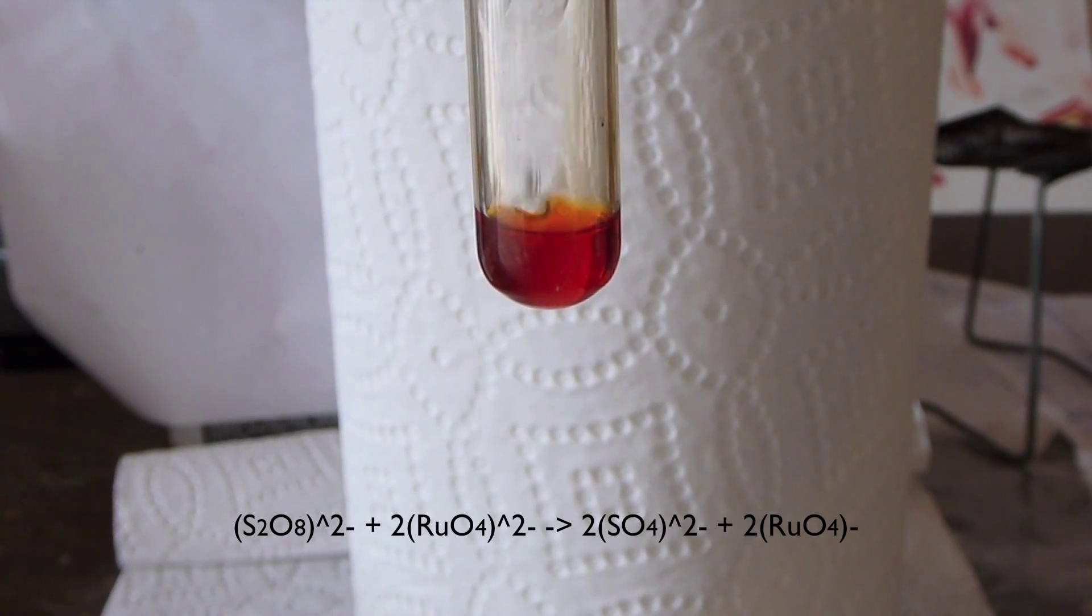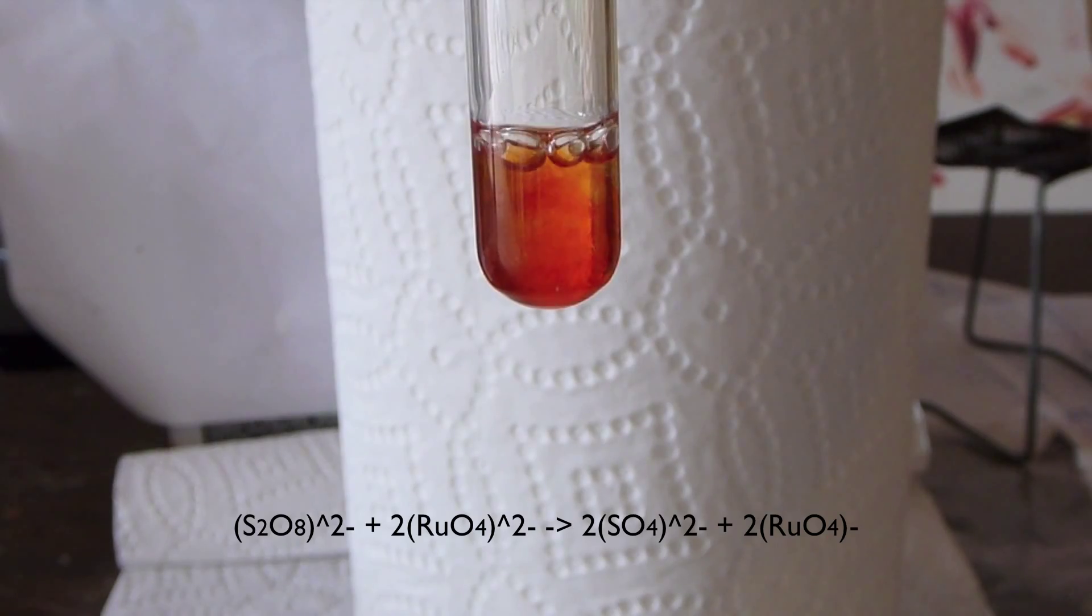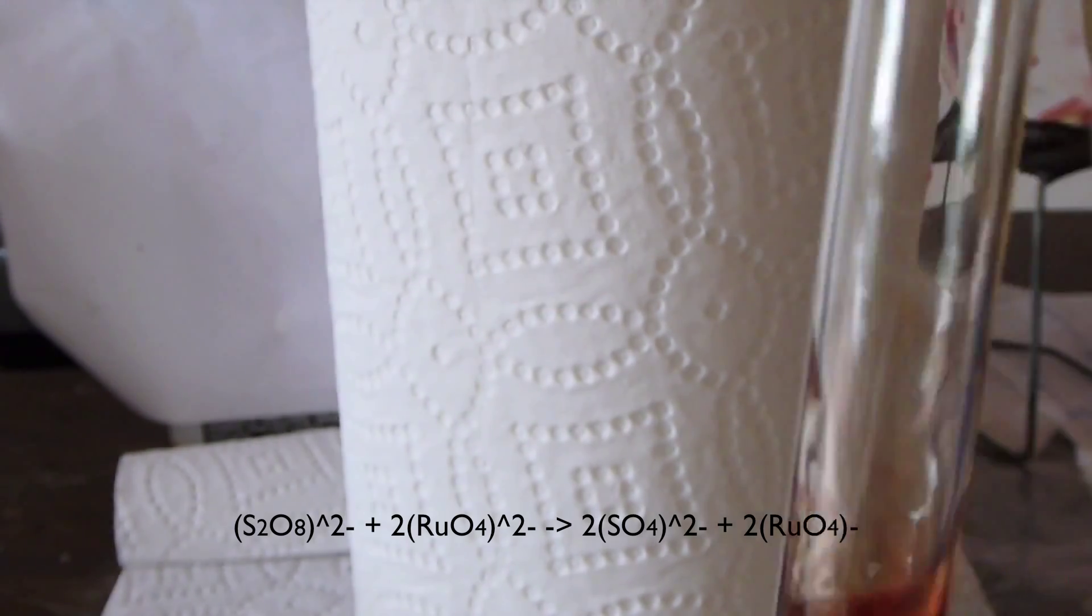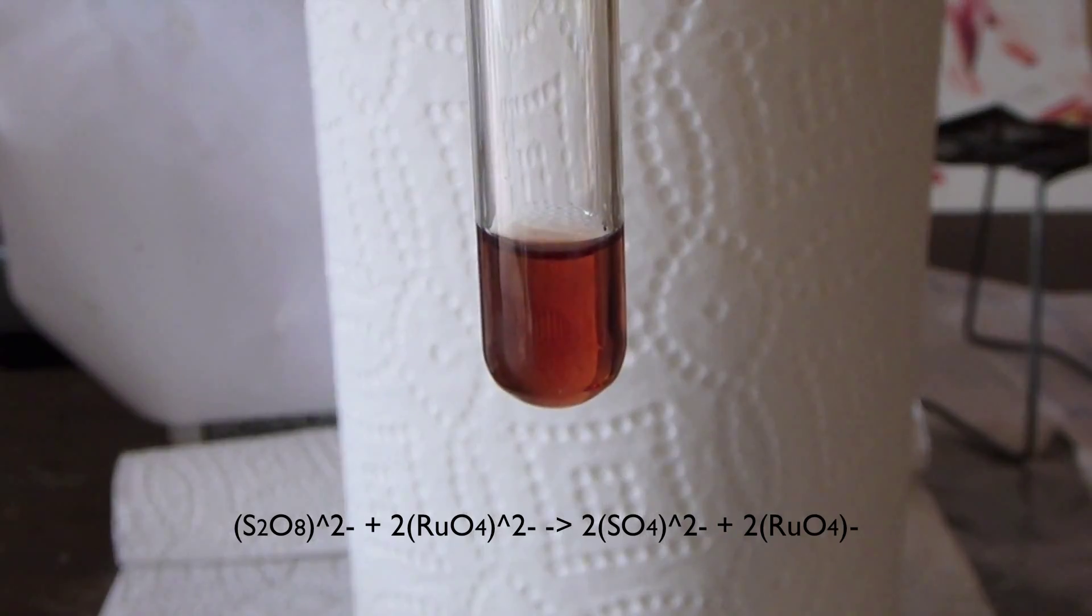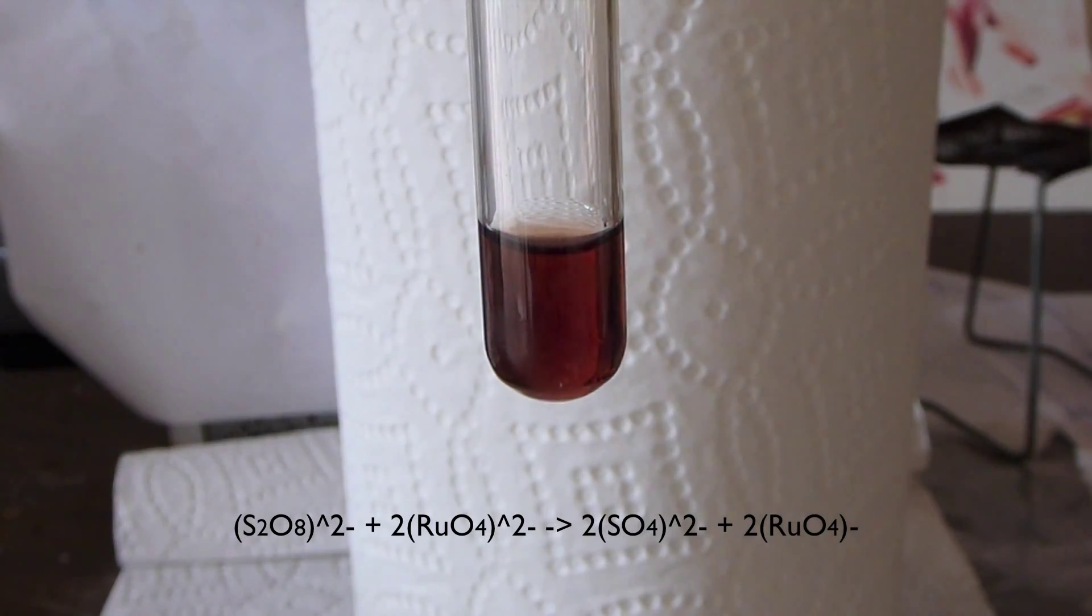So here I am adding the persulfate solution, and already you can see a distinct color change. I'm shaking it up a little bit, and you can see the color has definitely changed, and now the solution proceeds and gets darker and darker. Once it's this kind of inky brown black color, it's pure perruthenate.